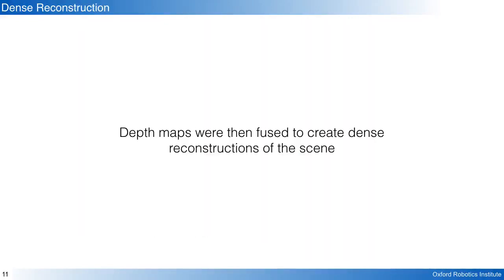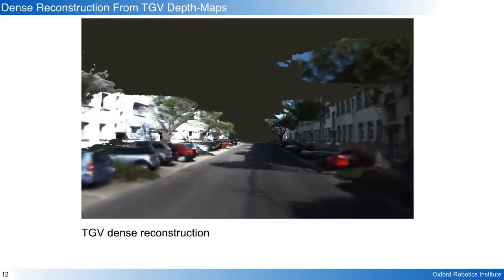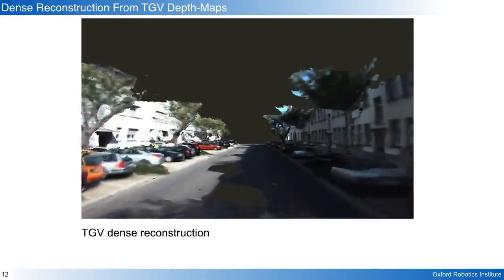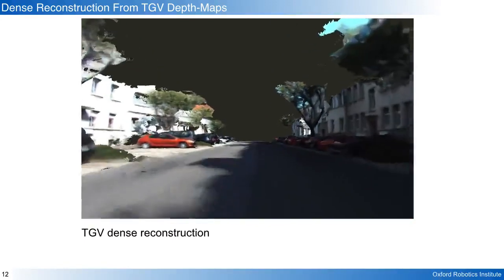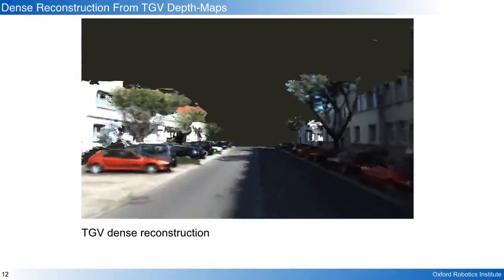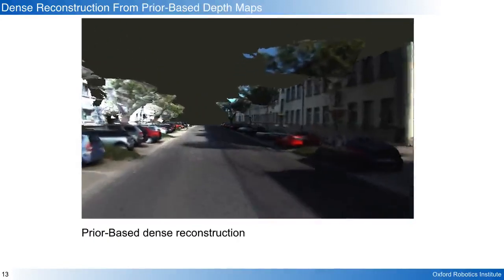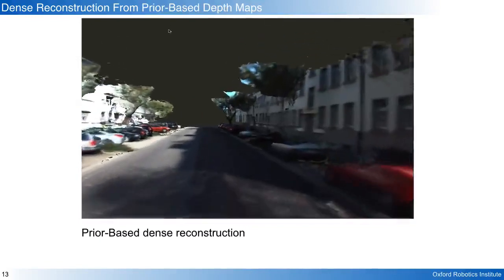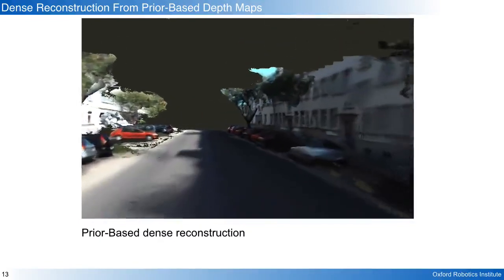To evaluate our work more rigorously, we used the depth maps to create a dense reconstruction. The dense reconstruction from the TGV depth maps showed noise in the buildings and missing sections in the road. The prior reconstruction shows more coverage and cleaner walls in the reconstruction without reducing the accuracy of the reconstructions.